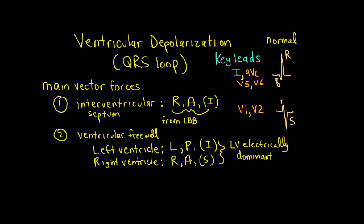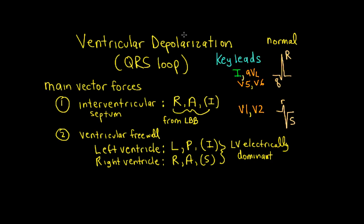Now let's review the ventricular depolarization process used to generate a QRS vector cardiogram loop. Vector number 1 is the interventricular septal forces, generated in the rightward anterior and inferior direction — though it can be superior as well. This depolarization spread comes from arborizations of the left bundle branch. The left ventricle is left posterior and inferior, while the right ventricle is right anterior and superior. The left ventricle is much bigger than the right, so LV free wall forces dominate overall.